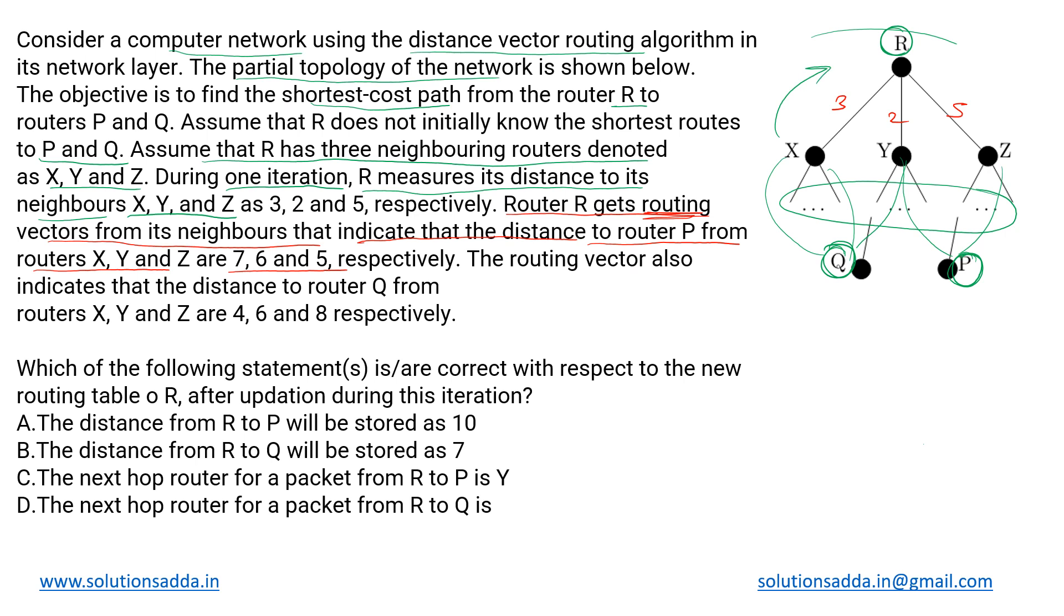Now this cannot be said to be the second iteration. Many iterations would already have taken place and after all that happens, X, Y and Z are able to resolve. They already come to know what is their distance from these nodes P and Q and so they exchange that distance vector with their neighbor R.